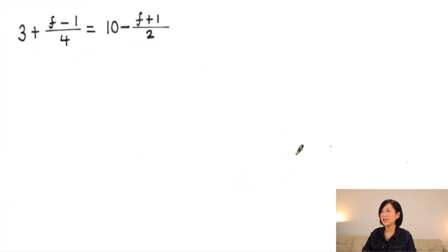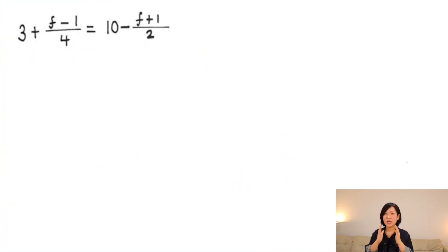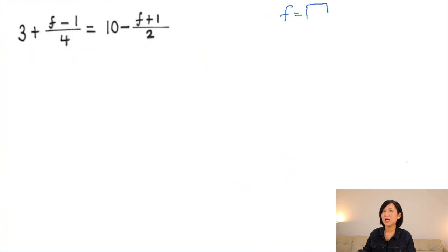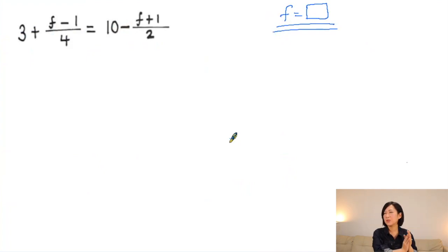So far we have practised how to simplify algebraic fractions. Now this is an equation — it has an equal sign with an expression on both sides. An equation means we need to solve it. Our final goal is to find f, so f equals a number. Before you start, always look at the terms and try to find the simplest way. I'm going to organise the terms: put all the fractions on the left side and all the numbers on the right side.